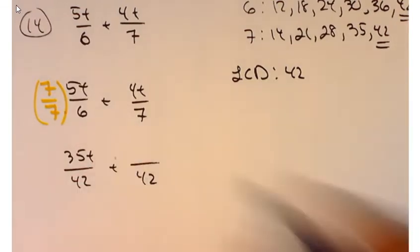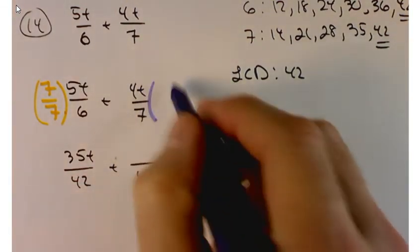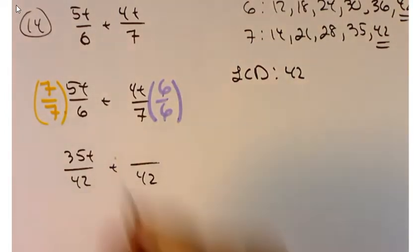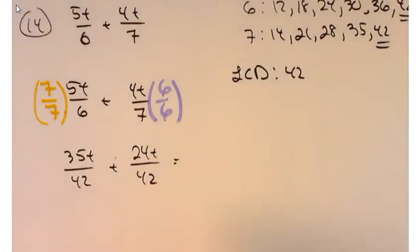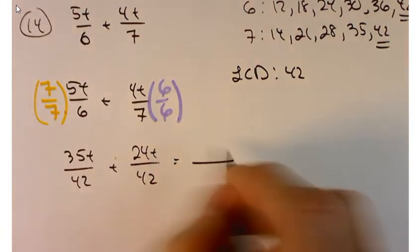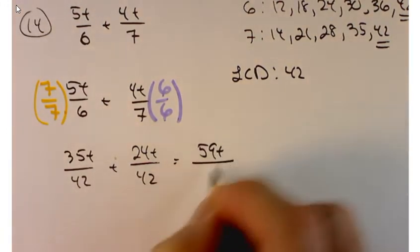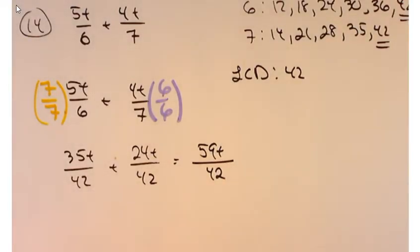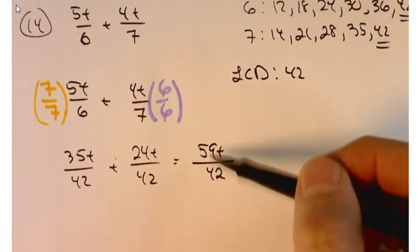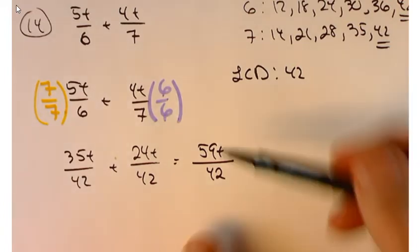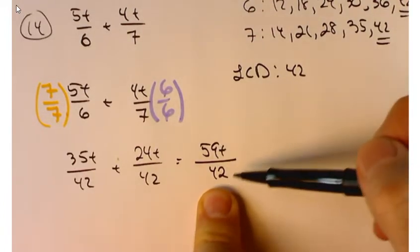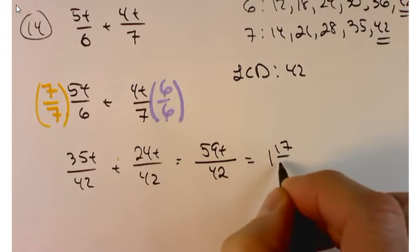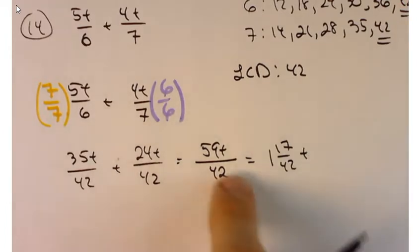Likewise for the other fraction, I need to multiply by 6: 6 times 7 gives me 42, and 6 times 4 gives me 24, so that's 24t. Now that these have common denominators, I can add the numerators — that gives me 59t over 42. If there was simplification to do, I'd expect it done, but 42 and 59 are relatively prime with no common factors. If it bothers you that the numerator is bigger, you could rewrite it: 42 goes into 59 once with remainder 17, so 1 and 17/42 times t. But the improper fraction form is fine.